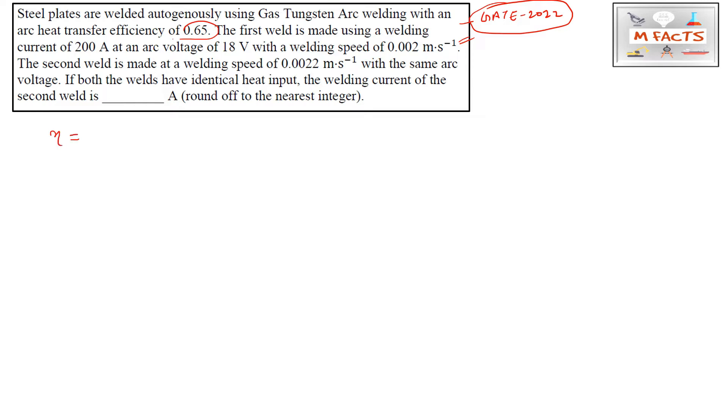The first weld is made using a welding current of 200 ampere, so i₁ = 200 A. The arc voltage is 18 volt, so V₁ = 18 V. The welding speed is 0.002 meter per second, so we can denote the welding speed as S₁ = 0.002 m/s. This is for the first weld.